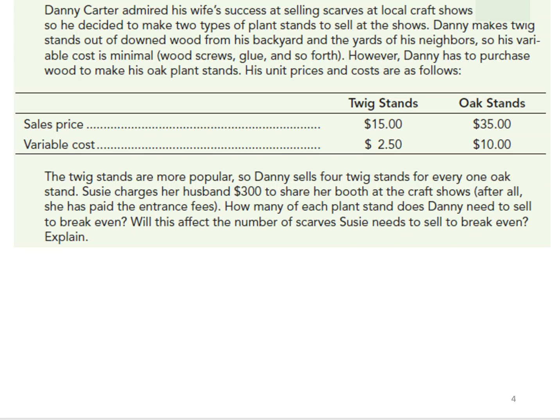Here we have another example of a company that has multiple products, and we need to determine the weighted average contribution margin, and ultimately how many of each the company needs to sell to break even. Danny Carter admired his wife's success at selling scarves at local craft shows, so he decided to make two types of plant stands to sell at the shows.